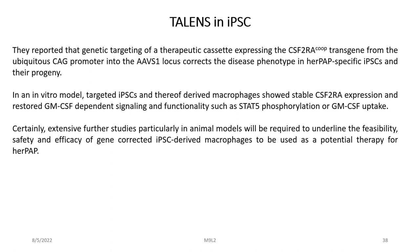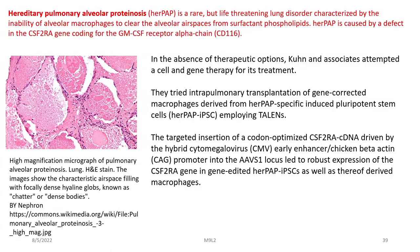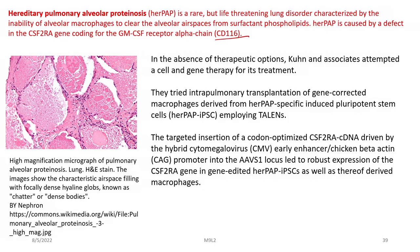Extensive studies, particularly in animal models, will be required to underline the feasibility, safety and efficacy of gene-corrected iPSC-derived macrophages to be used as a potential therapy for HAARPAP. HAARPAP, or hereditary pulmonary alveolar proteinosis, is a rare but life-threatening lung disorder characterized by the inability of alveolar macrophages to clear the alveolar airspace from surfactant phospholipids. HAARPAP is caused by a defect in the CSF2RA gene, encoding the GM-CSF receptor alpha chain, or CD116.